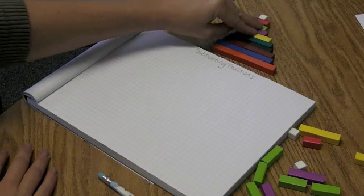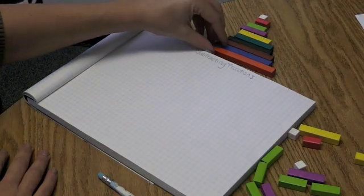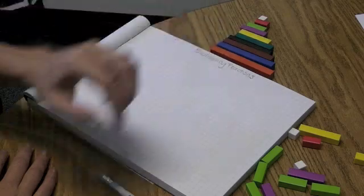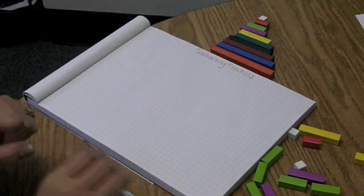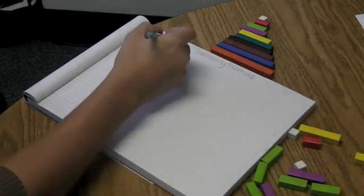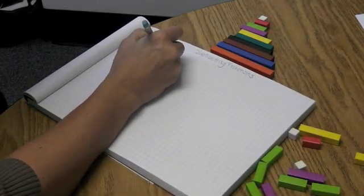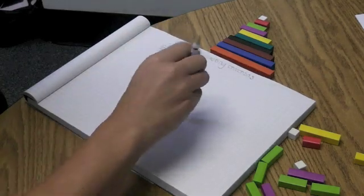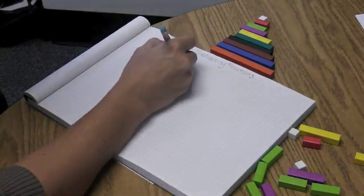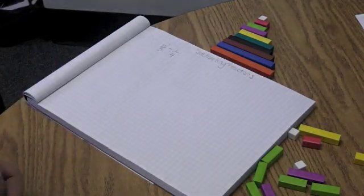Cuisenaire rods are a math manipulative that have units of measurement from 1 to 10. So let's get started. Let's try two-thirds take away one-fourth, or we also call that a quarter.